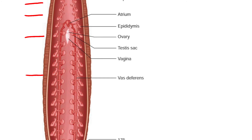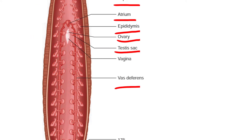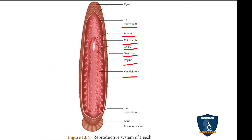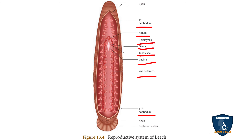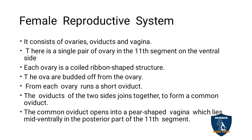The female reproductive organ consists of ovary, oviducts, and vagina. You can see the ovary and the vagina in the next slide, and the oviduct is also present there.